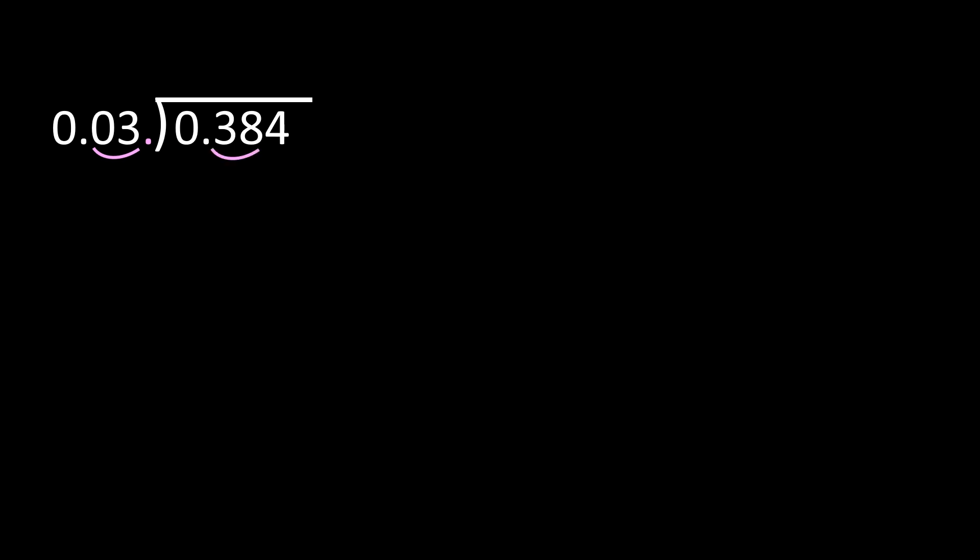In this example, we have 384 thousandths divided by 3 hundredths. The first thing we need to look at is the divisor. We can't have a decimal number in the divisor, so we need to move the decimal point so we have a whole number. We're going to move that decimal point two places to the right. If I move my decimal point in the divisor, I also have to move it in the dividend the same number of places — two places to the right. I highly recommend that you rewrite your problem so that you can see that what you now have is 38 and 4 tenths divided by 3.